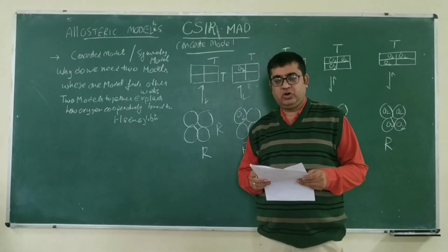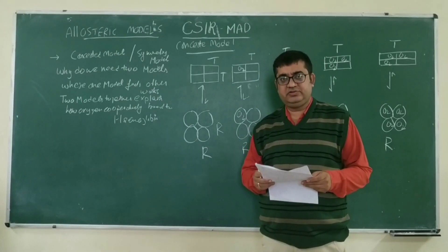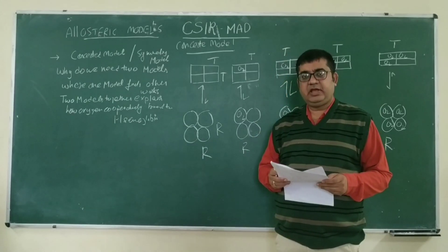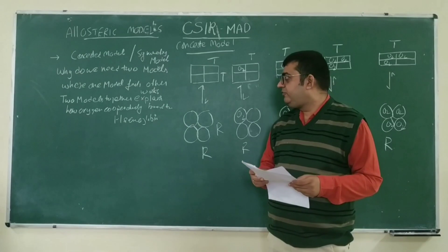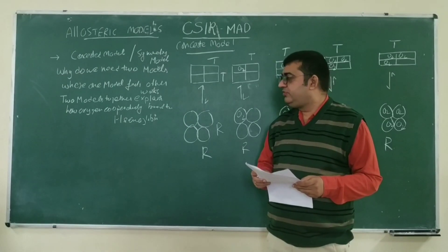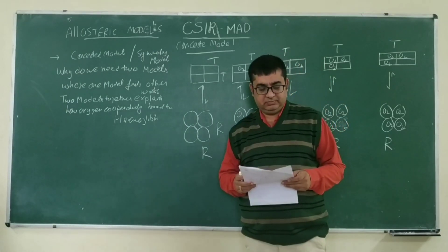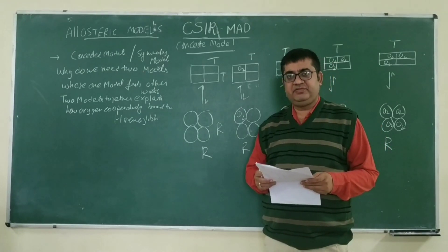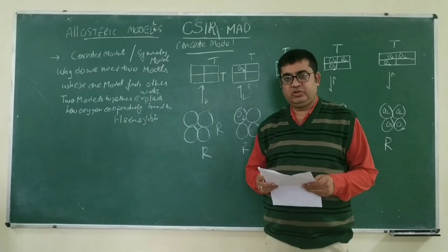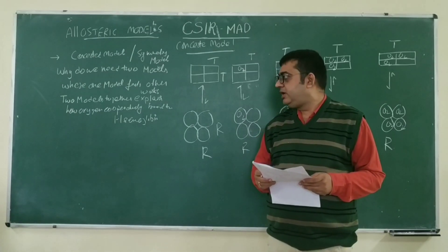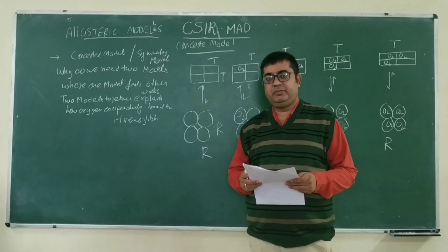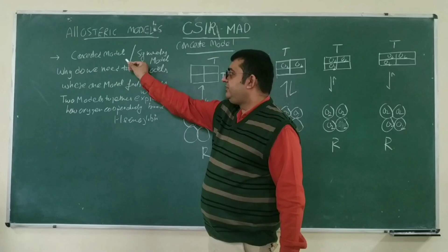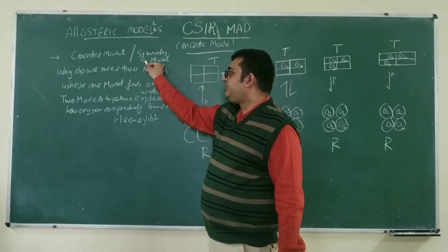Good evening friends, today we are going to talk about allosteric models. Basically, to explain allosterism, we need two kinds of models. There are certain Michaelis-Menten enzymes that work on the basis of Michaelis-Menten kinetics, but allosteric enzymes need different models for their working. There are basically two types of models: one is the concerted model and another is the sequential model.